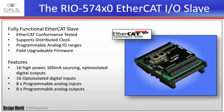Galil recently released the EtherCAT I/O module — the RIO 57,000 — which is an EtherCAT slave that communicates with the DMC-50,000 or any other certified EtherCAT master. It has been conformance tested by Beckhoff, confirming it functions as specified with EtherCAT masters. It supports distributed clock. Analog I/O ranges are programmable from 0–5V to plus or minus 10 volts. It comes with field-upgradable firmware downloadable from the Galil website. All RIOs come standard with 16 high-power 500mA sourcing opto-isolated digital outputs, 16 opto-isolated digital inputs, and an option for eight analog inputs and eight analog outputs.